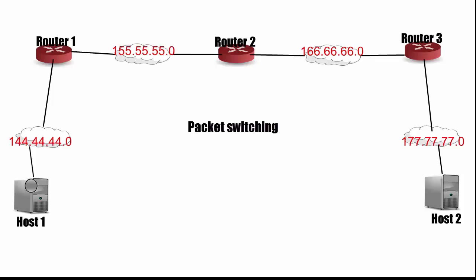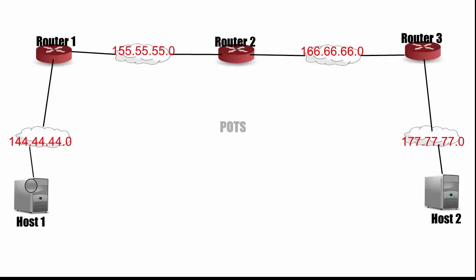Packet switching is an entirely different method than circuit switching. In circuit switching, there is one path that all packets take, and this path needs to be set up prior to any communication. An example of circuit switching is the old POTS, or plain old telephone system.